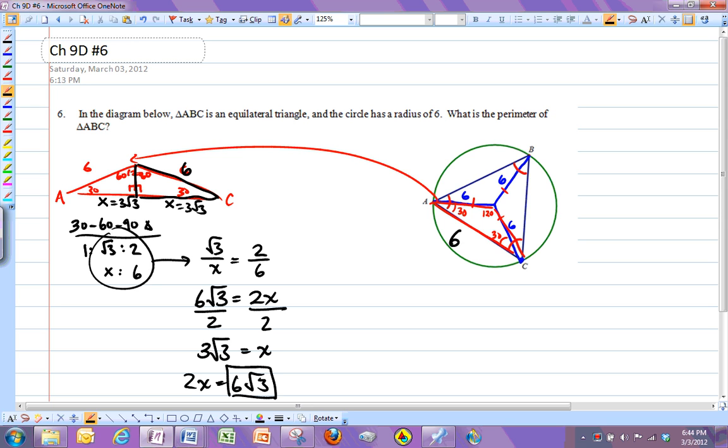So now I know this side here is 6 root 3, which means all of them are 6 root 3. And I want the perimeter of the whole triangle, so the perimeter of triangle ABC is 3 times that 6 root 3, which is 18 root 3.